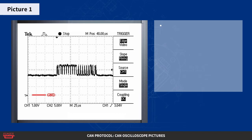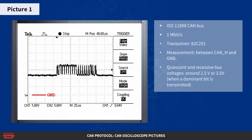Here's a picture from a perfectly normal ISO 11898 CAN bus running at 1 Mbps. The transceiver is a 82C251, in other words, the physical layer is the one specified by ISO 11898. The measurement was done between CAN high and ground. Note that the quiescent and recessive bus voltages lie around 2.5 volts. When a dominant bit is transmitted, the voltage rises to around 3.5 volts.